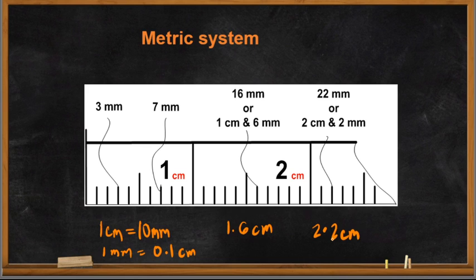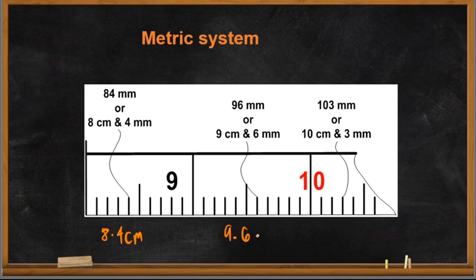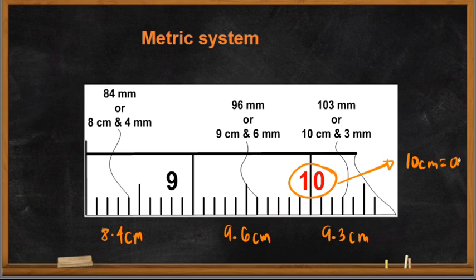Another example: 8 cm and 4 mm gives 8.4 cm. Also, your 10 cm is equivalent to 0.1 meters. So 10 centimeters equals 0.1 meters.